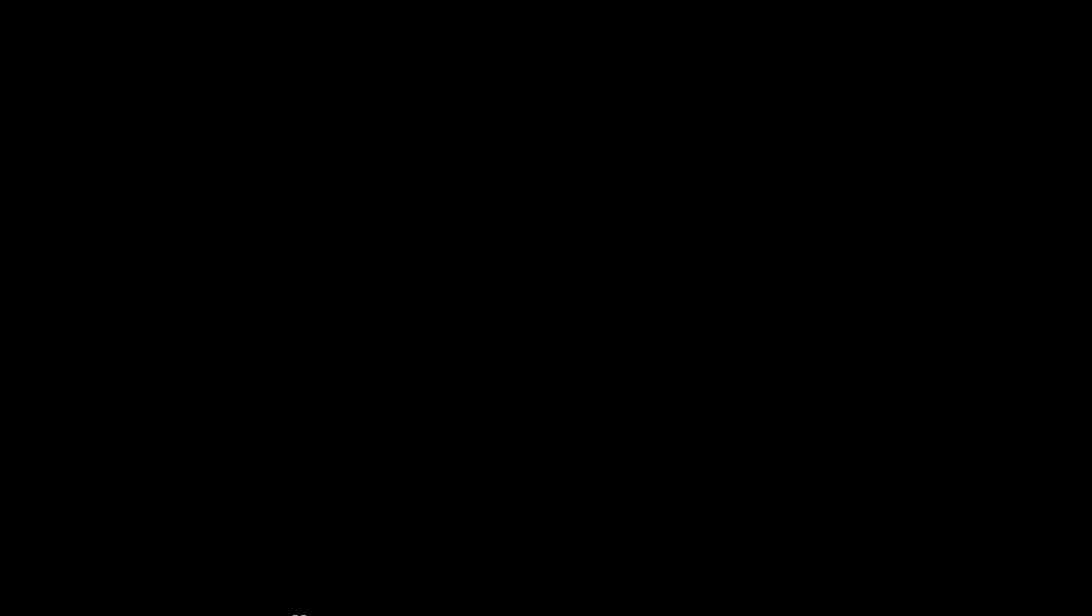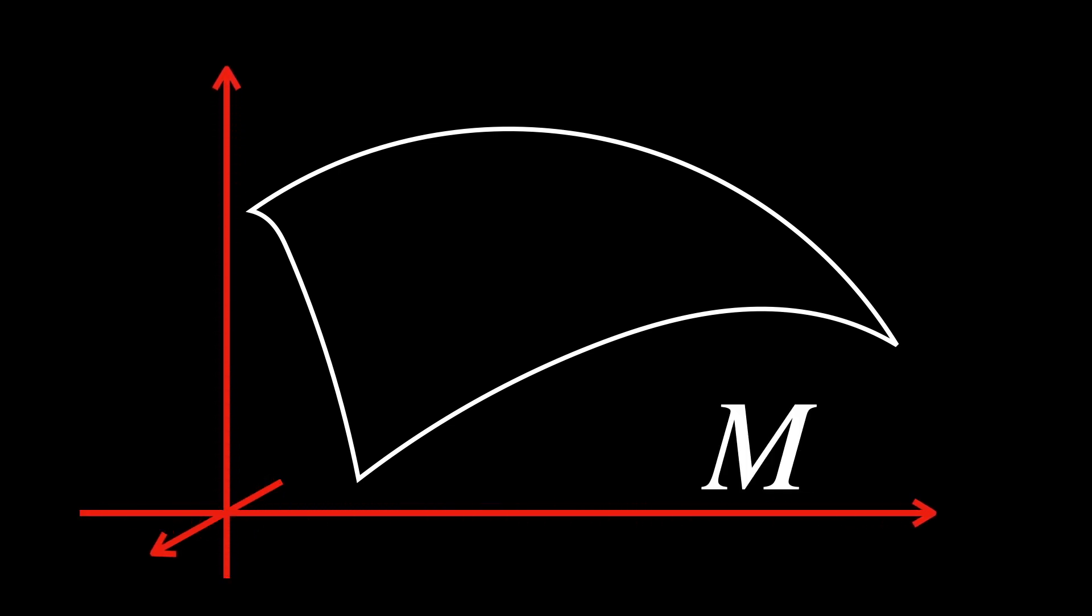Now, say that instead of a line, we draw a two-dimensional space, much like a loosely hanging sheet. This is a manifold, by the way, and it is located in a three-dimensional space.